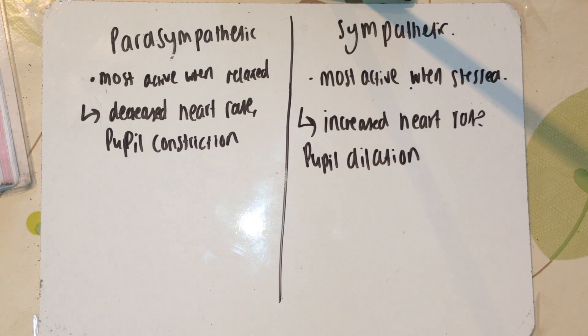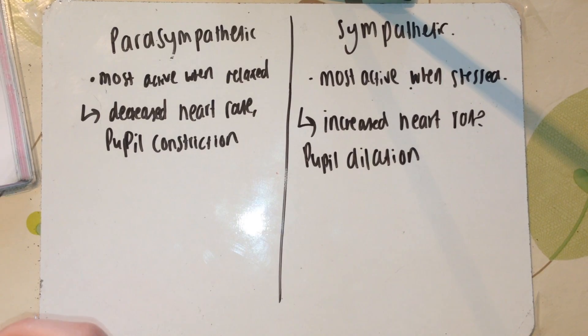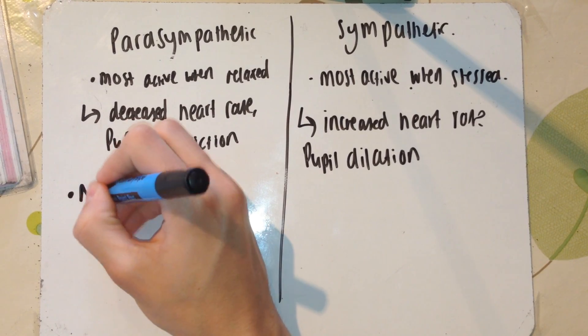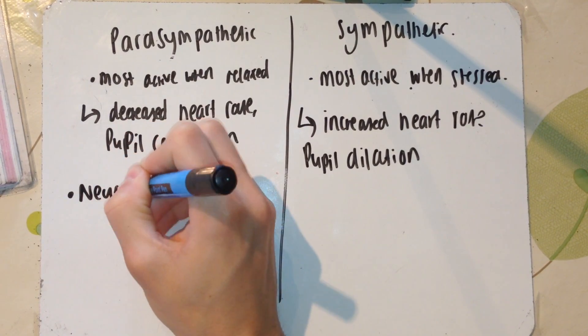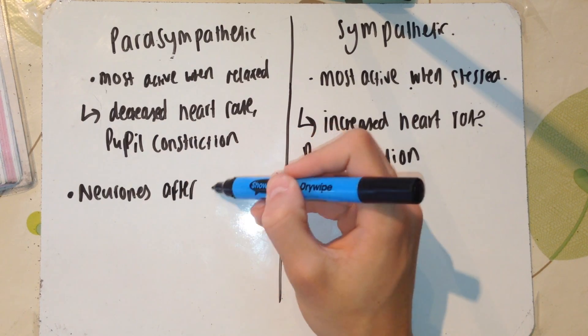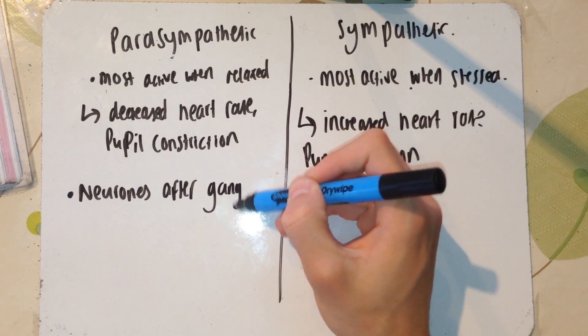A ganglion is essentially where two neurons in the autonomic nervous system connect. It's like a swelling. The book says autonomic connections to effectors always consist of at least two neurons. That means there's two neurons going to the effector, and the swelling where these two neurons meet is called a ganglion.